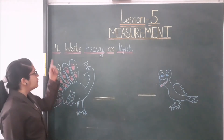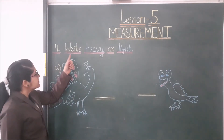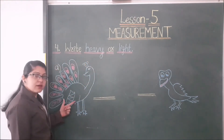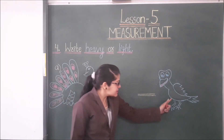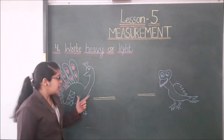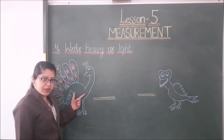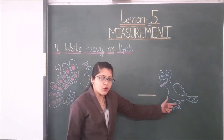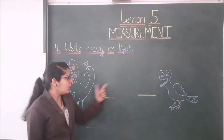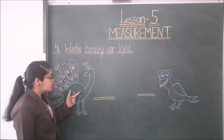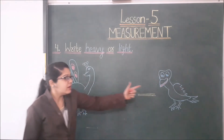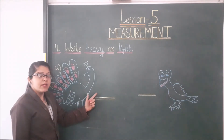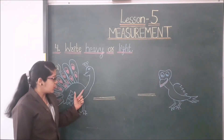Now students, let's see question number 4: 'Write heavy or light.' Let's see the first one — this is a peacock and this is a crow. Which one is heavy? Peacock is heavier than a crow, so here we write 'heavy' for the peacock.